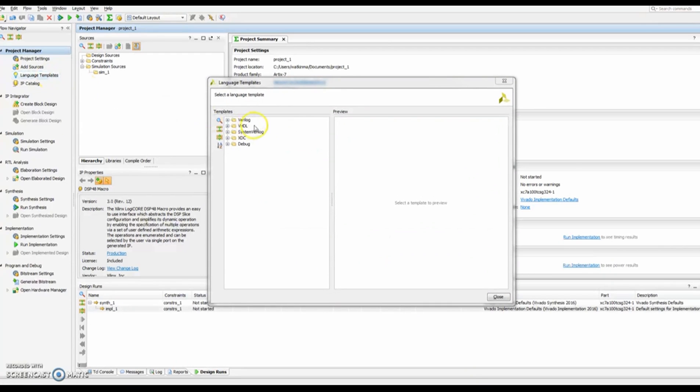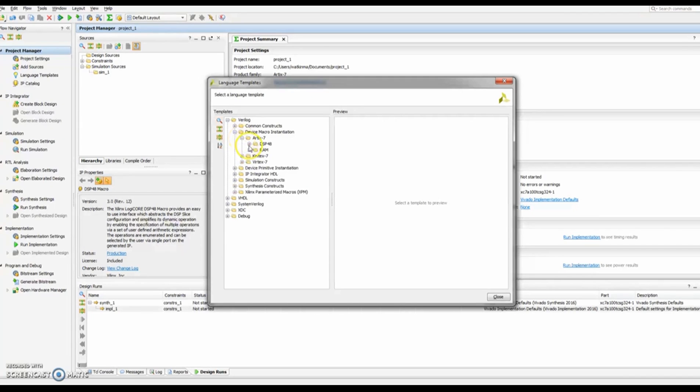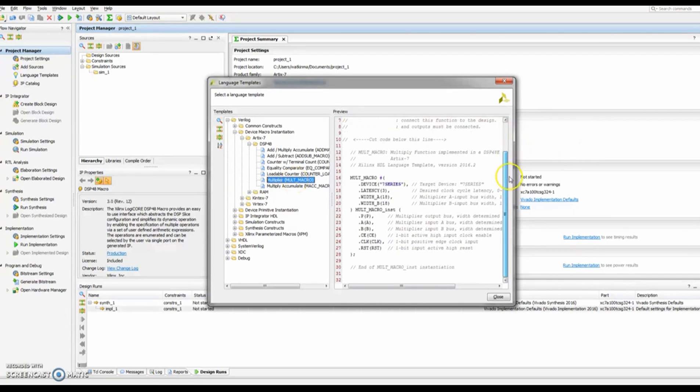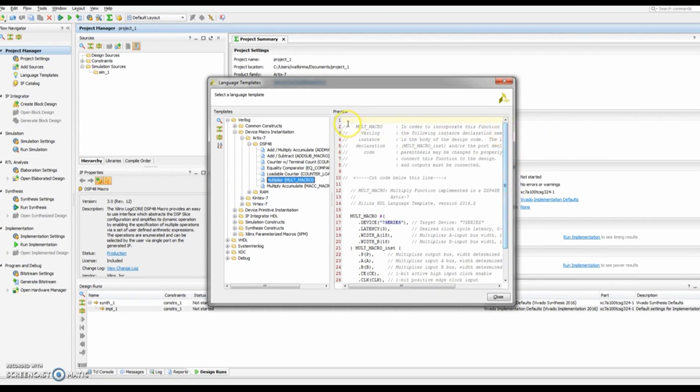When you click on that under Verilog there are a few areas of interest. One under the device macro instantiation. Our board is an Artix 7. Under the DSP48E1 you can then see there are a number of different macros over here. So the one that we previously saw was one that just performs multiplication and so within this you can see the macro that you can then copy out and put in some area of your file.